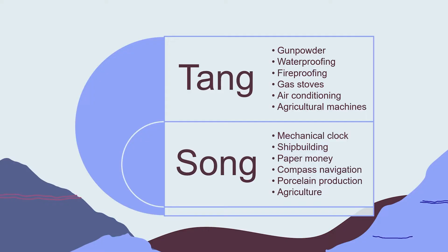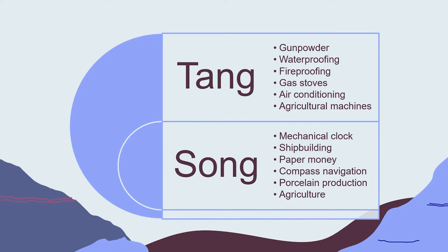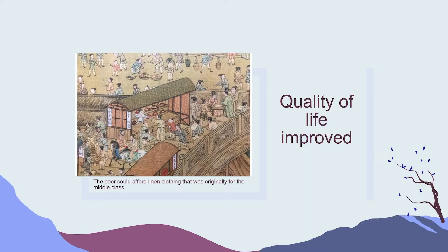A lot of these technologies carried over into the Song dynasty, but the Song dynasty created even more innovations. Some of the most notable ones are the mechanical clock, shipbuilding, paper money, compass navigation, porcelain production, and even more agricultural machines that all helped their economy. Overall, this meant the quality of life improved and the poor could actually afford linen clothing that was originally only affordable for the middle class — which is what the image here depicts.